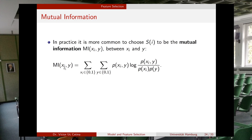For a specific feature i, the mutual information formula assumes that the feature can take values zero or one and that the label y can also take values zero or one. You compute the joint probability of the occurrence of xi and y, divide by the product of the individual probabilities of xi and y, compute the logarithm, and multiply again by the joint probability.